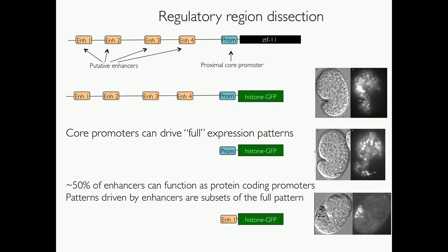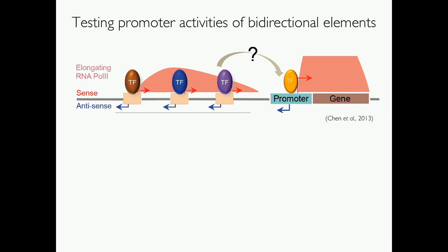Having said that, we wanted to concentrate on the second aim of our project: the bidirectionality of elements. One of the similarities between enhancers and promoters is that they can initiate bidirectional transcription, shown with the red and blue arrows. They can also drive productive elongation, which is usually recorded on the same strand.